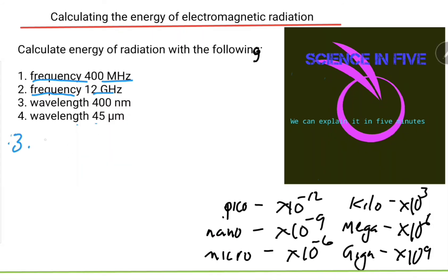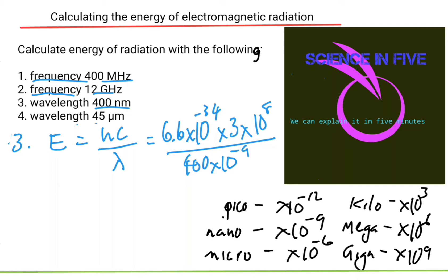So number three says let's use E equals hc over lambda. The h value is 6.6 times 10 to the minus 34, the c we said is 3 times 10 to the power of 8, and the wavelength is 400 nanometers. Now plug into the formula and see if you get the same answer that I will get.